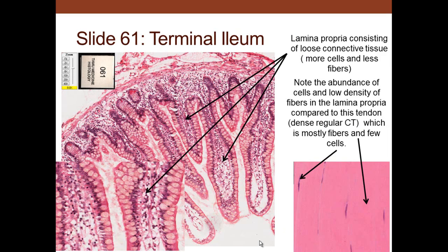Looking at the terminal ileum, we see epithelial cells on the surface and connective tissue below—the lamina propria—composed of many cells. This is loose connective tissue: more cells and fewer fibers. Note the abundance of cells and low density of fibers. Compare that to the tendon, which is dense regular connective tissue with few cells and lots of fibers arranged regularly in one direction, because stress runs from muscle to bone attachment all in one direction.